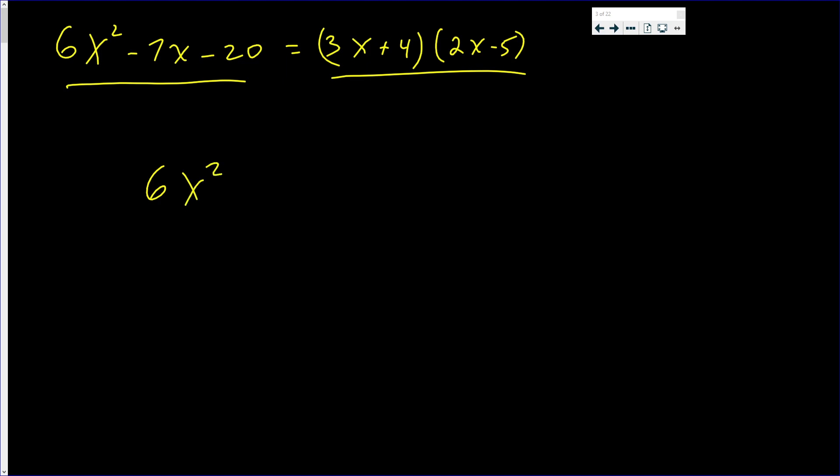So you start off with 6x² - 7x - 20. You multiply those two numbers. Because the coefficient of x² becomes 1 or just x², 7x stays the same. But the constant is going to be 6 times 20, which is 120.